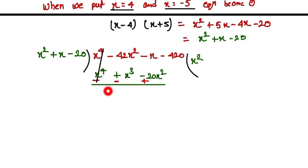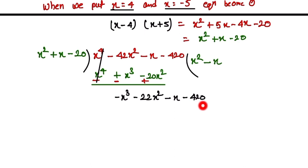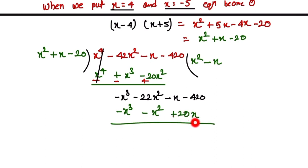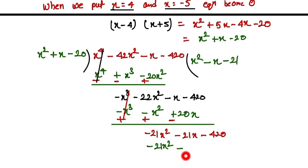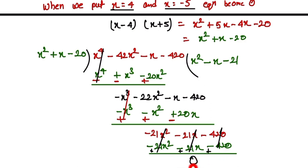We change the sign of the lower expression, so x to the power 4 cancels out, leaving minus x cubed minus 22x squared minus x minus 420. We multiply by minus x, giving minus x cubed minus x squared plus 20x. Changing signs: plus plus plus. This leaves minus 21x squared minus 21x minus 420. We multiply by negative 21: minus 21x squared minus 21x minus 420. Changing signs again, all terms cancel, leaving remainder zero.